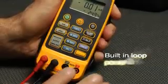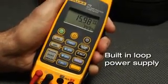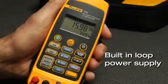In addition, the 773 has a built-in loop power supply, so you can power a transmitter and measure its milliamp output signal for testing and troubleshooting.